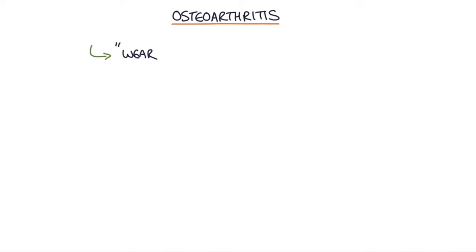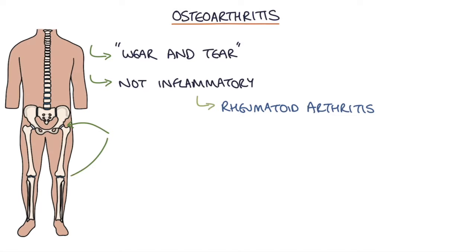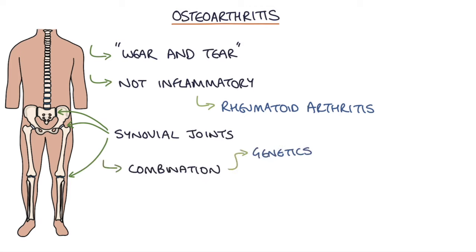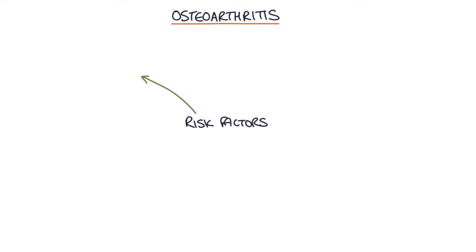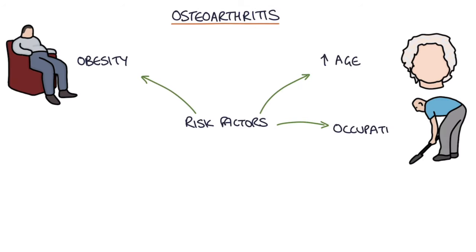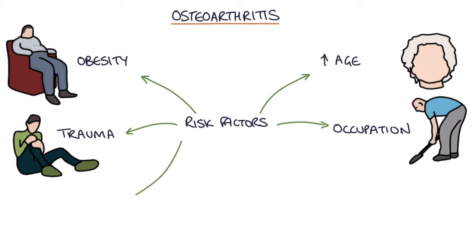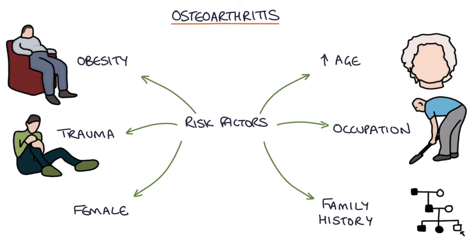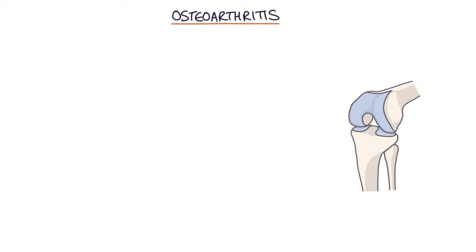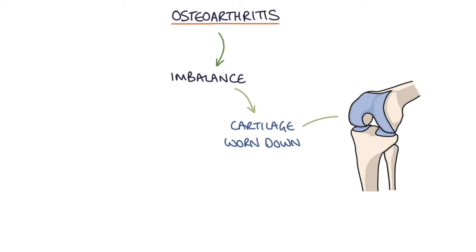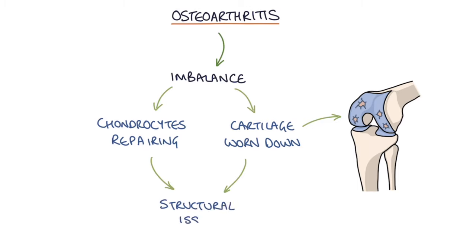Osteoarthritis is often described as wear and tear in the joints. It's not an inflammatory condition like rheumatoid arthritis, and it occurs in the synovial joints. It's a combination of genetic factors, overuse, and injury to the joint. Risk factors include obesity, increased age, occupation — particularly occupations with high usage of particular joints — trauma to the joint, being female, and a family history of osteoarthritis. It's thought to result from an imbalance between cartilage being worn down and chondrocytes repairing that cartilage, leading to structural issues within the joint that cause more wear and tear and pain.